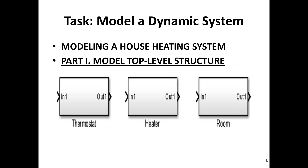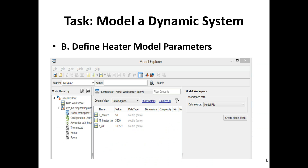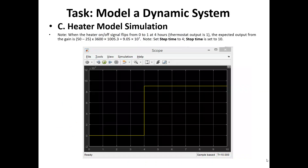This is a continuation of other parameters, variables, and constants. The first part of the house heating system is the model top-level structure. We have three main subsystems: the thermostat, the heater, and the room. We'll be modeling a heater component — specifically a heater switch — with inputs like heater on/off and room temperature, and the output being the heat gain. After building the blocks for the heater switch, we define the model parameters and their values.